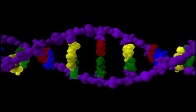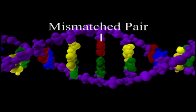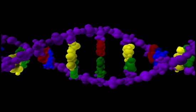Occasionally, during replication, in spite of all the proofreading and corrections, a mismatched base pair in one of the chromosomes — for instance, an adenine base pairing with a cytosine base — goes unnoticed, and the cell proceeds with either mitosis or meiosis.